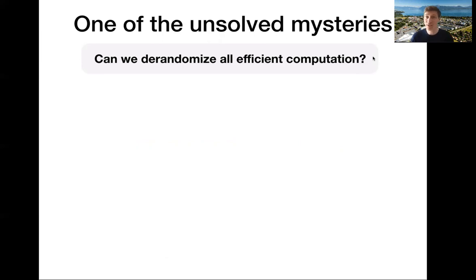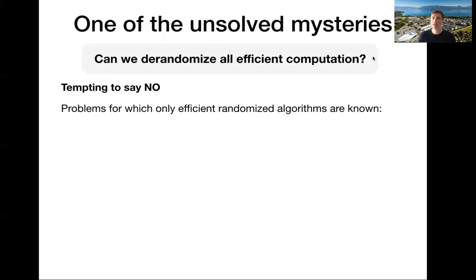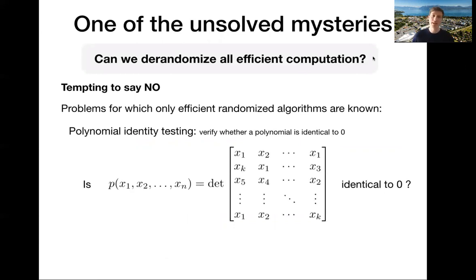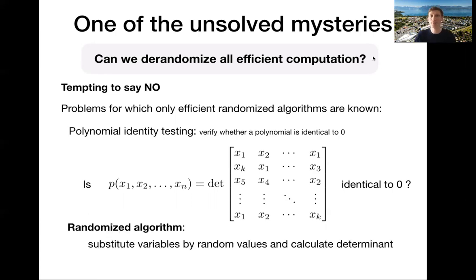And this is one of the unsolved mysteries of computer science, whether randomization actually helps to design efficient algorithms. First, it's tempting to say yes, randomization has to help, right? Because there are many problems for which only efficient randomized algorithms are known. One example is polynomial identity testing, verifying whether a polynomial is identical to zero or not. So a good example is, if you have a determinant of some variables, is this polynomial identical to zero or not? There's a trivial randomized algorithm. Just plug in random values and calculate the determinant.